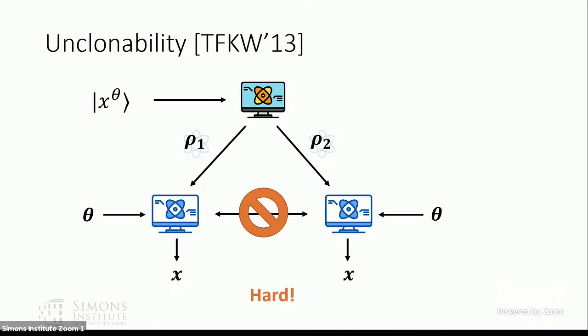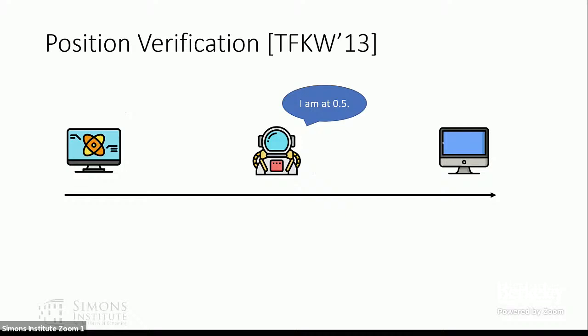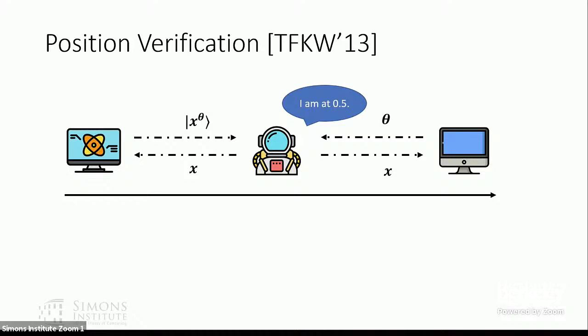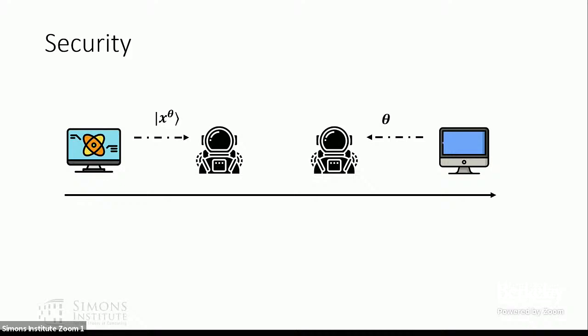With the help of BB84 states we can show how to do position verification in a perfectly secure way without hardware assumptions. The left verifier, which is a quantum verifier, sends the BB84 states, and the right verifier sends the basis information theta, which helps the astronaut recover the secret x. When these two pieces of information meet in the middle, the astronaut extracts x and broadcasts it to both the quantum verifier and the classical verifier.